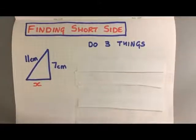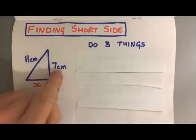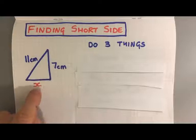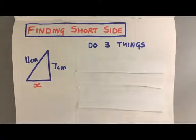Now you're probably ahead of the game and you've probably realized that you could be asked to find the short side. Here's a triangle: long side is 11, one of the short sides is 7. They haven't told us the other short side, so that's what we've got to find out. We've got to do three things.